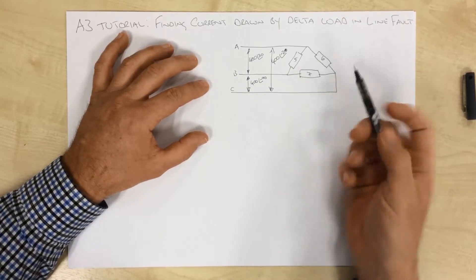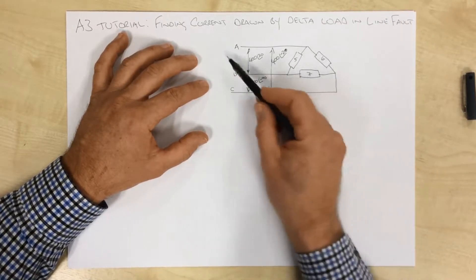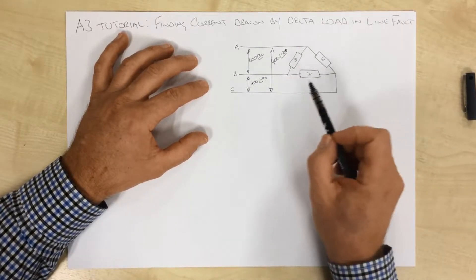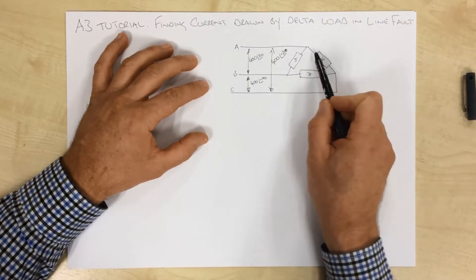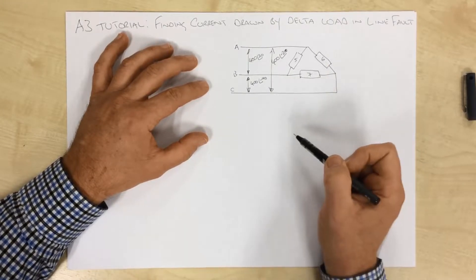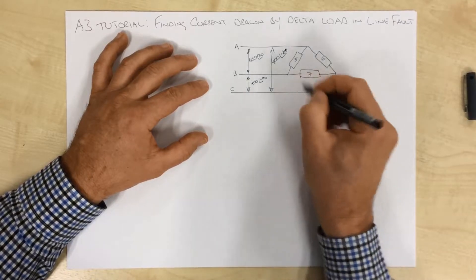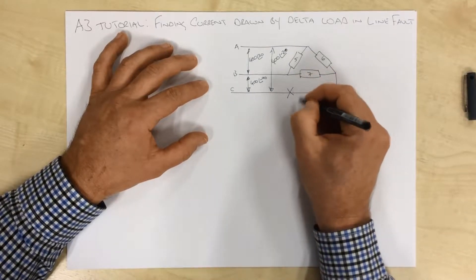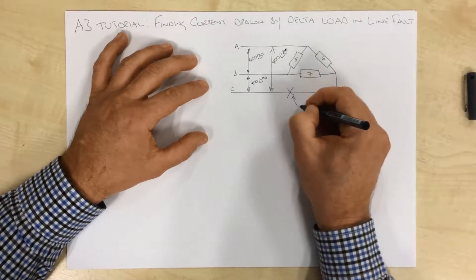What we're going to do is we're going to look at this - here's our delta load, our three phases going into it. What happens, how much current is going to be drawn by this system if one of these lines goes faulty? So for argument's sake, we'll make it the bottom one. We're going to call this our fault.